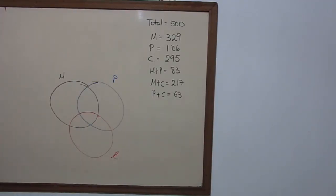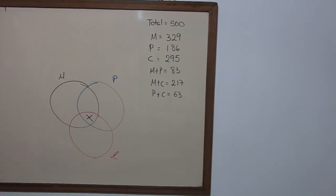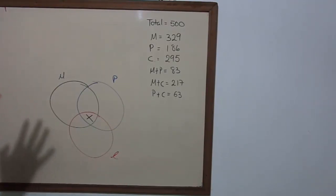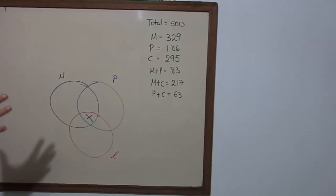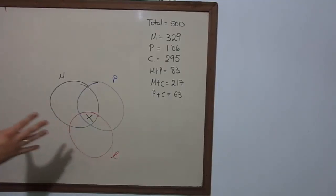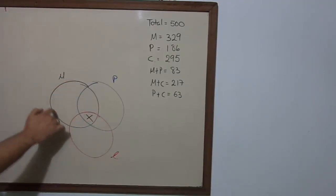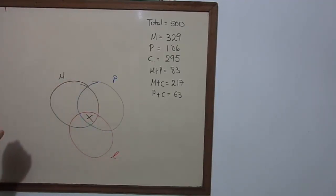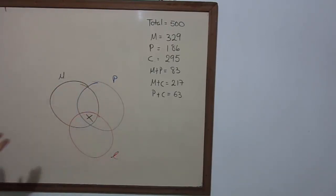We're going to call the intersection of the three sets x — we call it x — and we're going to solve for x. I'll try to explain this as best I can. If we add this set — the black set here — plus the blue, plus the red, if we add them up...